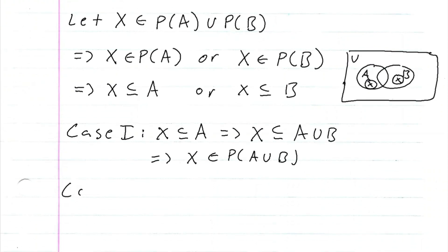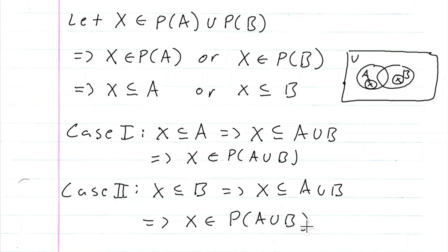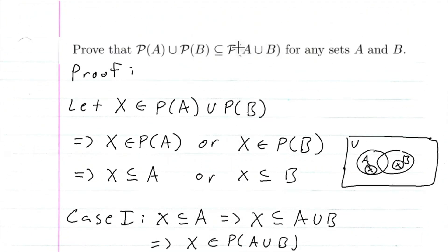Now let's move on to case two: X is a subset of B. Using the same reasoning as in case one, this implies that X is a subset of A union B, and then this implies that X is an element of the power set of A union B. So you can see that in either case, we get X is an element of the power set of A union B, which is what we desired.